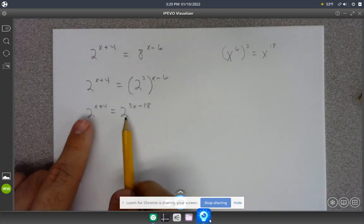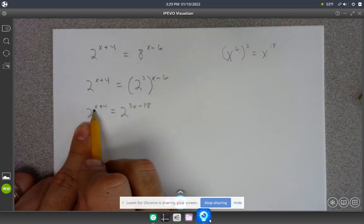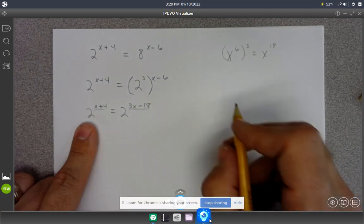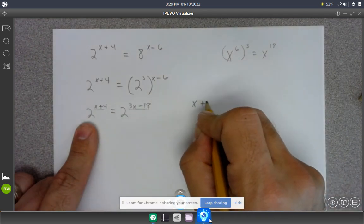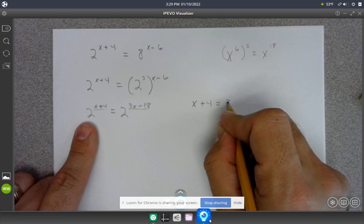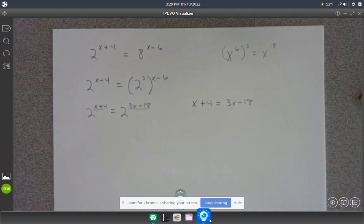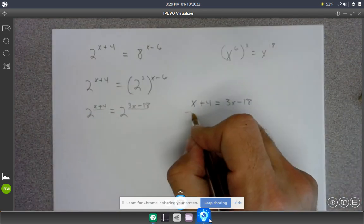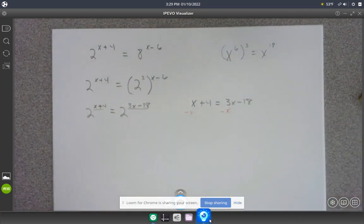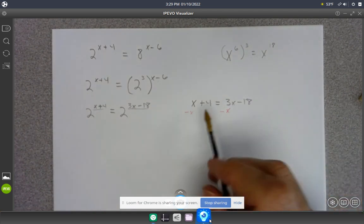And again, because these bases are the same, I can equate these two exponents. I'll say x plus 4 has to equal 3x minus 18. And then we can just solve this equation - move our x's over to one side.